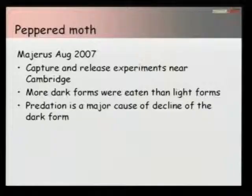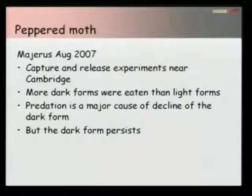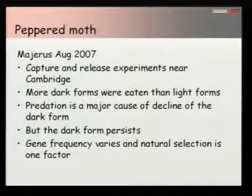Predation — being eaten by a bird — is a major cause of the decline of the dark form, because now in Cambridgeshire the dark form is becoming less common and the light form more common, rather than the original event where pollution caused the dark form to become common. So we seem to have a mechanism to explain natural selection in action, causing a change in gene frequency. The dark form still persists in most areas, but overall there is definitely a change in gene frequency, and natural selection does seem to be one of the factors driving this.